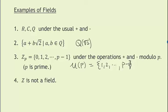Note that Z, the set of integers, is not a field. It is an abelian group under addition, but under multiplication, we do not have multiplicative inverses.